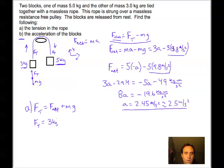And so when we start making some substitutions in there, Ft is equal to 3 kilograms times 2.45 meters per second squared. And that's what we solved for here. Plus the mass again, which is 3 kilograms times 9.8 meters per second squared.